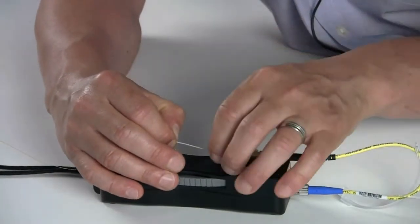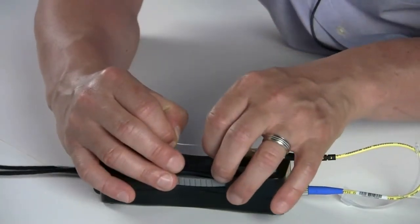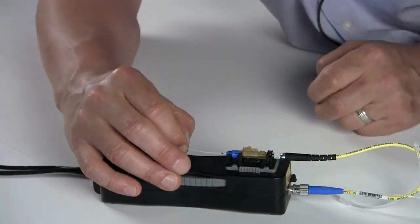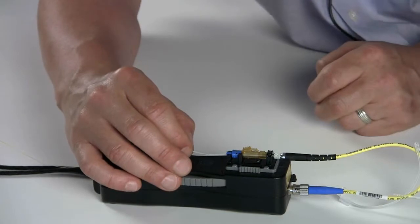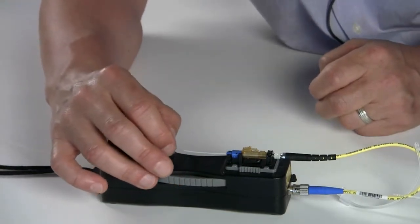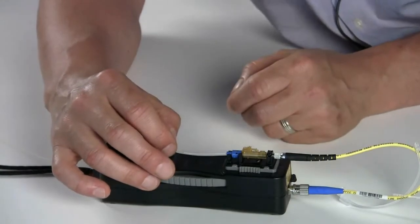Slide the buildup tube and the cleaved fiber into the connector. The buffer tube will stop at the insertion point. Slide the fiber cable in a little bit further until that stops.